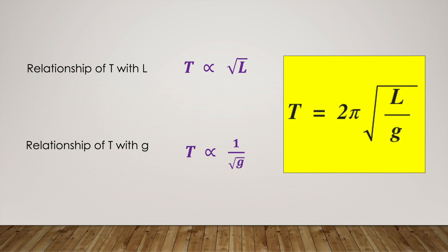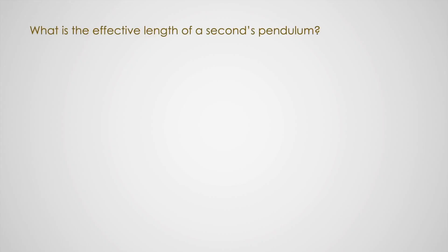Let us start with one immediate application of this formula. The application is: what is the effective length of a seconds pendulum? In a seconds pendulum, we know that the time period is equal to 2 seconds and that the acceleration due to gravity is 9.8 meters per second squared. The formula we are going to use is T equals 2π√(L/g).